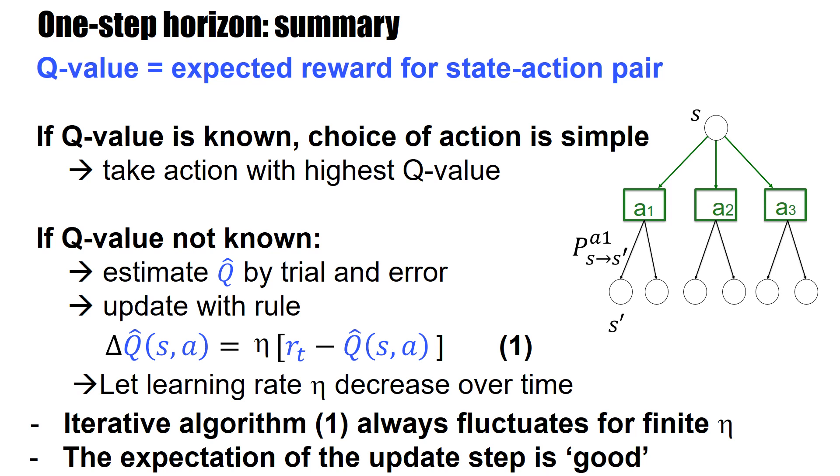So let's summarize this whole chapter on one step horizon. The Q value is the expected reward for a given state action pair. And if the Q value is known, the choice of action is simple. Well, if the Q value is biggest for this branch, then this is the one I should choose.